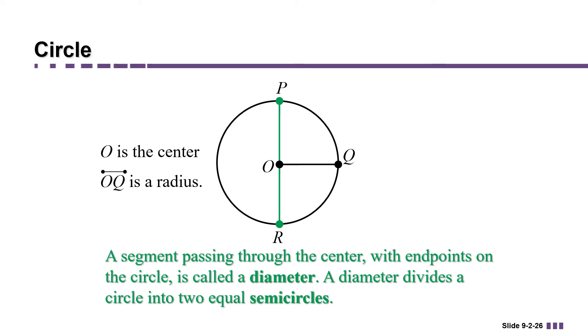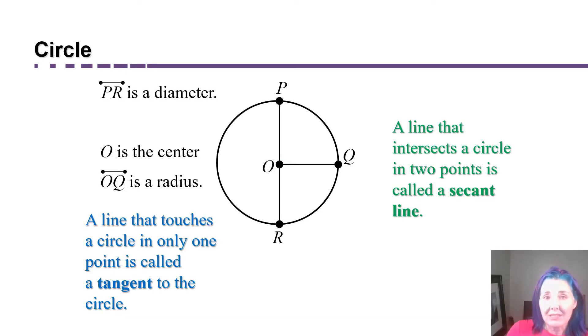So this segment PR is called a diameter. A line that intersects a circle at two points is called a secant line. This line through PQ is an example of a secant line.